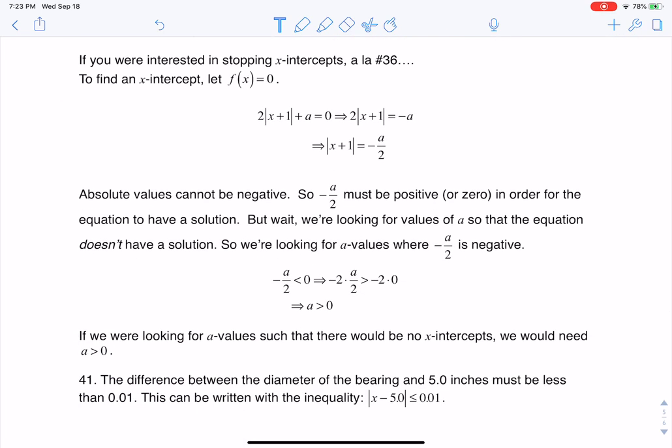So I said if you were interested in stopping x-intercepts which is what number 36 asked of us we could play that out too. Now x-intercepts are a little bit different. To find an x-intercept you actually need to let y equal 0. So you're going to let your function 0 out and you see me doing that right here. I let my function 0 out and because I have an absolute value equation the first thing I need to do is isolate the absolute value term.